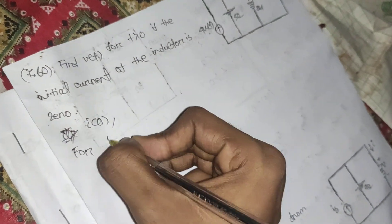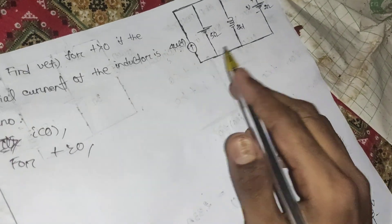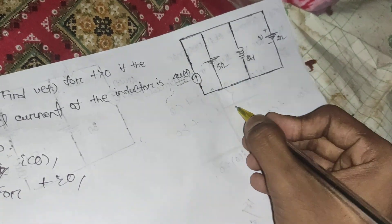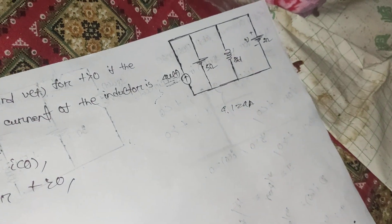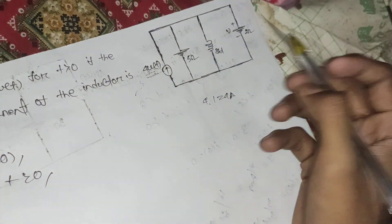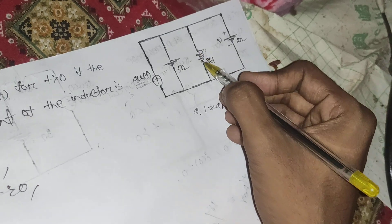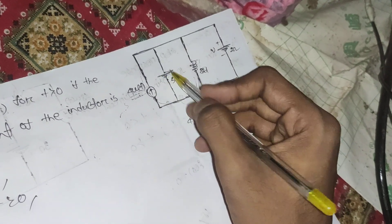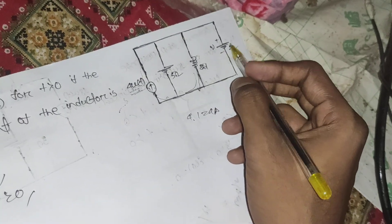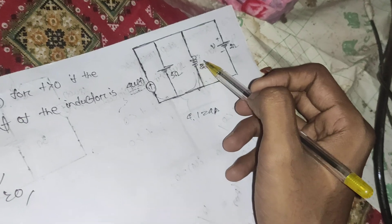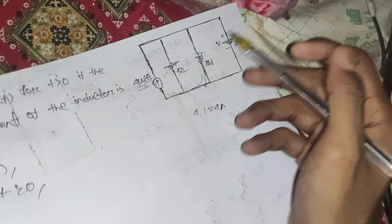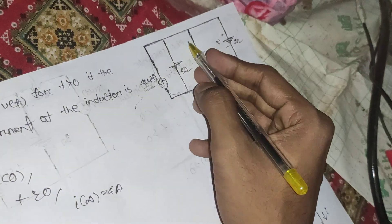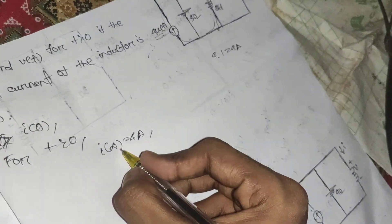For t greater than 0, u(t) goes to 1, so the current source becomes 4 amperes. In steady-state mode, we replace the inductor with a short circuit. All current flows through the inductor, so i(∞) = 4 amperes.